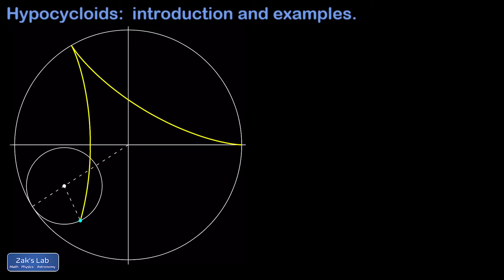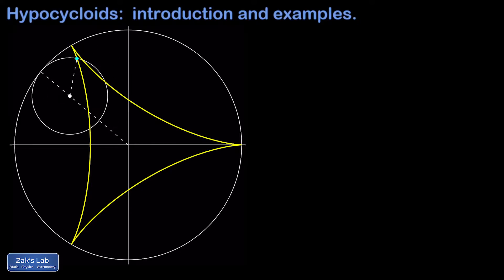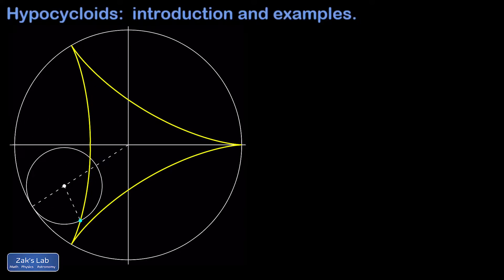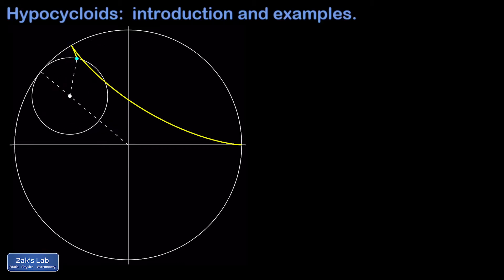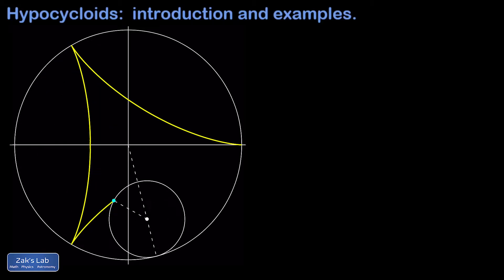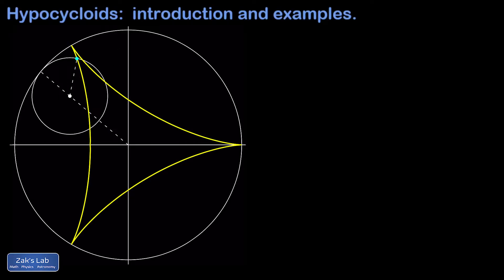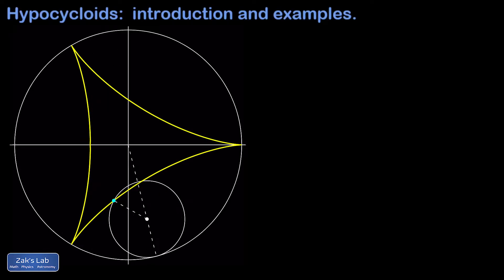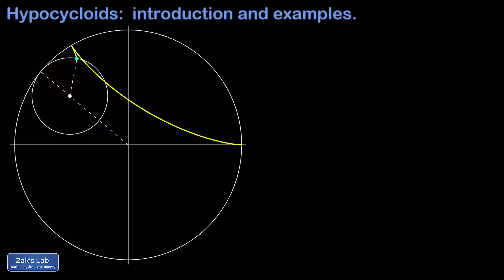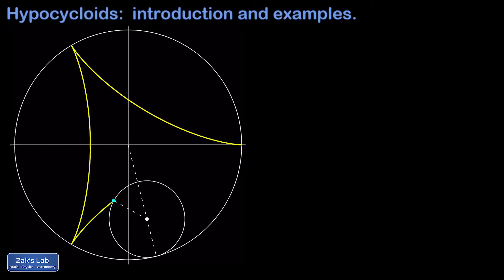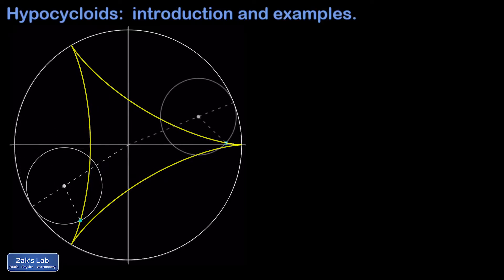This particular hypocycloid is three-pointed because the circumference of the inner circle is exactly one-third the circumference of the larger outer circle, so the smaller circle rolls exactly three times per larger revolution. The radii have the same relationship because circumference is proportional to radius — the radius of the larger circle is three times the radius of the smaller circle.